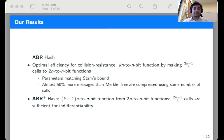We also present a simple modification of ABR tree that we call ABR+ mode that can achieve indifferentiability from random oracle by making the same (2k-1)/3 calls to the underlying functions. The only difference is that in case of ABR+ we compress one block less.